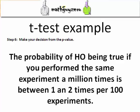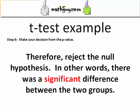With a probability value between .01 and .02, what that literally means is if you perform this same experiment a million times under this exact same condition, it would only be true about one or two times per hundred experiments. That's not very reassuring. So if it's only true one or two times per hundred under this condition, that gives you evidence to reject the null hypothesis. In other words, there was indeed a significant difference between these two groups.